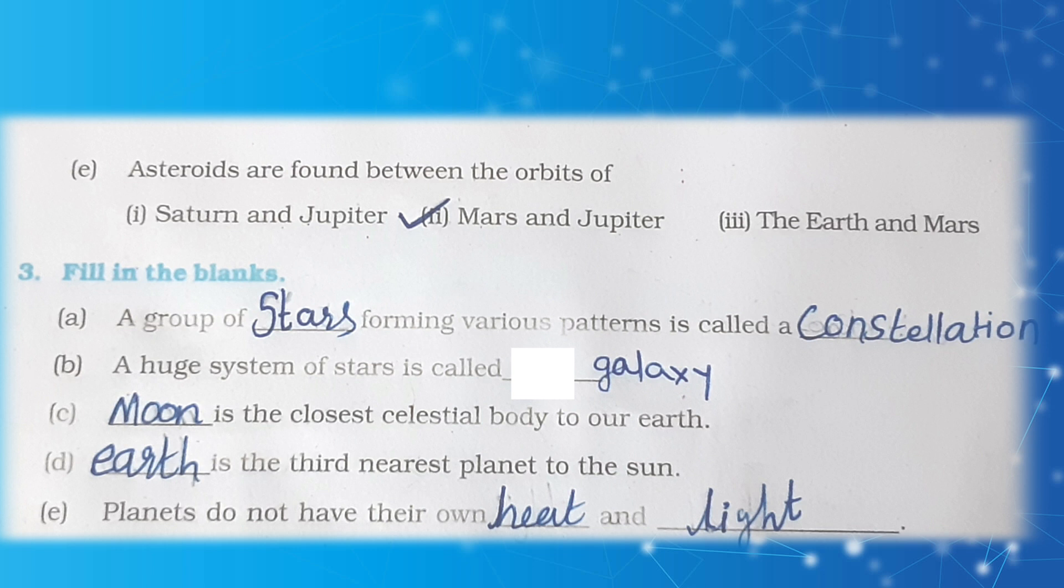Fill in the blanks. A group of stars forming various patterns is called a constellation. A huge system of stars is called a galaxy. Moon is the closest celestial body to our Earth. Earth is the third nearest planet to the Sun. Planets do not have their own heat or light.